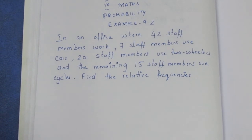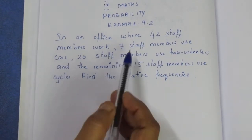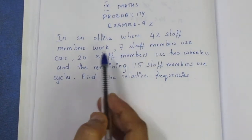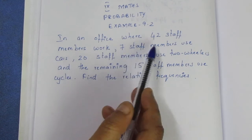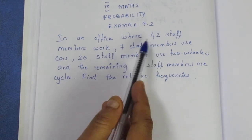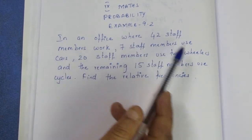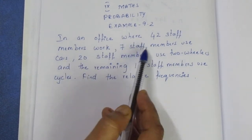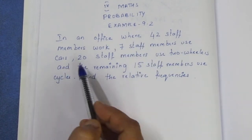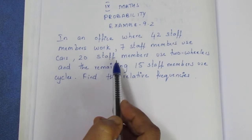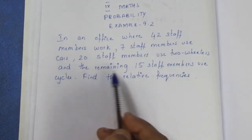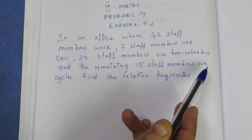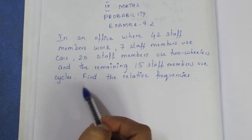Let's see the question: In an office where 42 staff members work, 7 staff members use cars, 20 staff members use 2-wheelers, and the remaining 15 staff members use cycles.